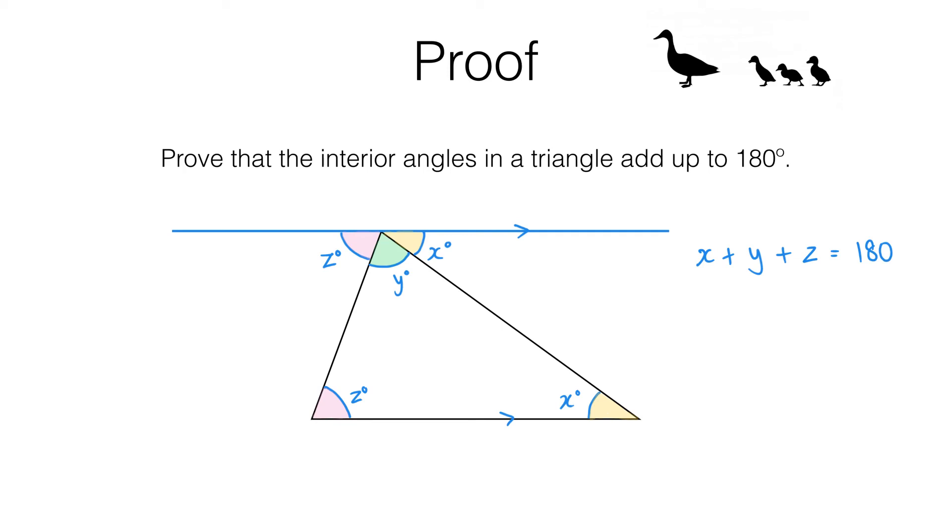But wait a minute. Look at the interior angles of the triangle. We've got x degrees, y degrees and z degrees. And we've just shown that no matter what x, y and z are, they must add up to 180 because of what we know about alternate angles.